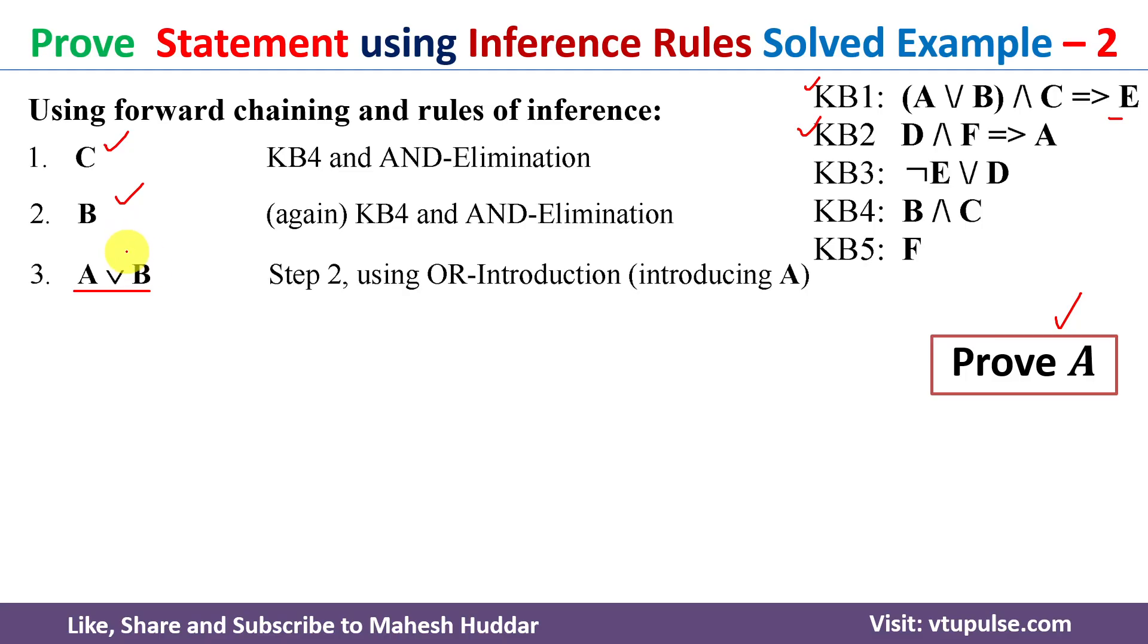Why can I write this particular thing? B is already true. If B is true, B or anything is true. That's the reason I have introduced OR with respect to A in this case.